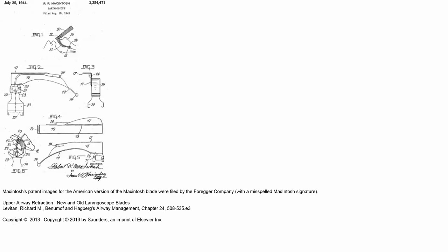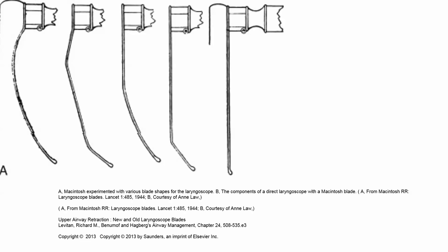Sir Robert Macintosh invented and patented the Macintosh blade in the 1940s. This sketch shows the patent for the laryngoscope blade. It was labeled as an improved blade for laryngoscopy — improved over the straight blade, which preexisted. This photograph and sketch show the evolution of the straight blade into a curved blade, and the original publication was in Lancet, 1944.